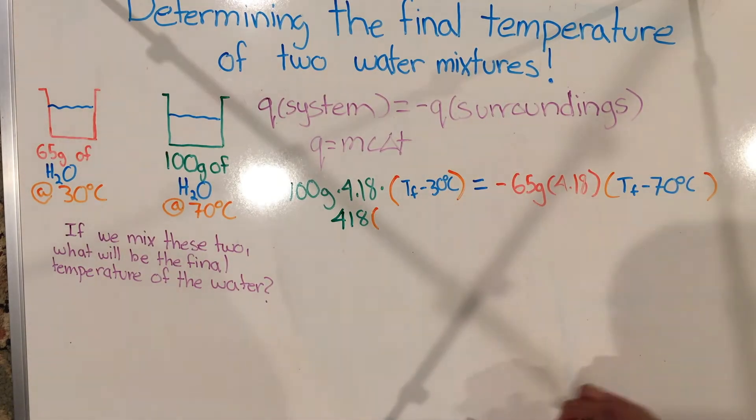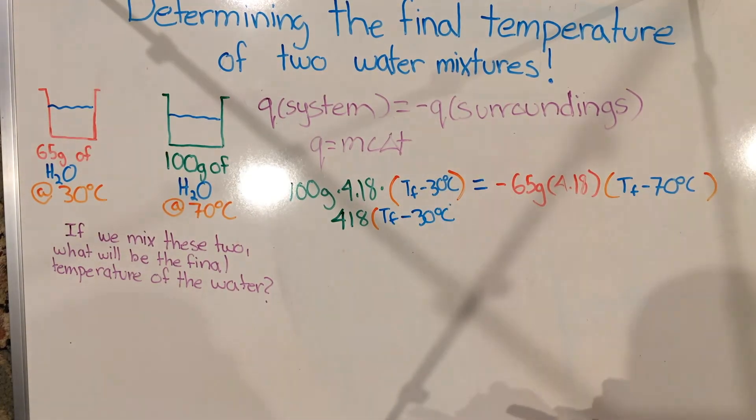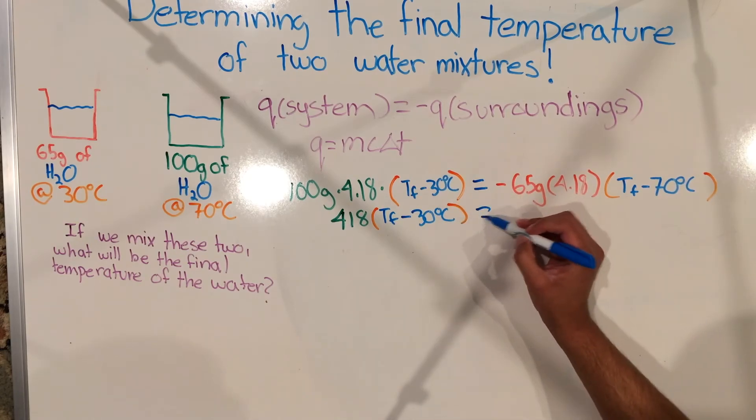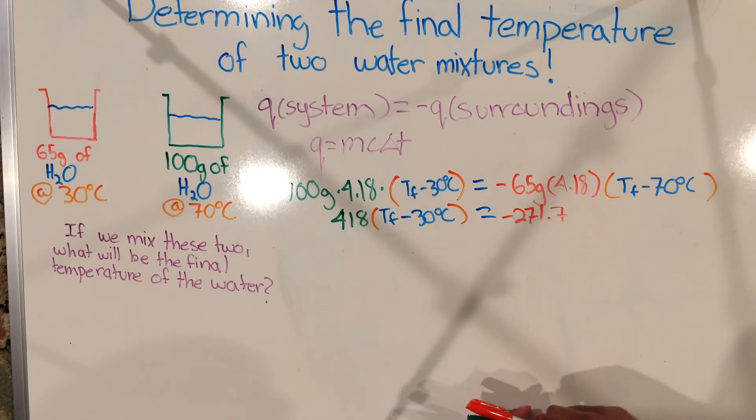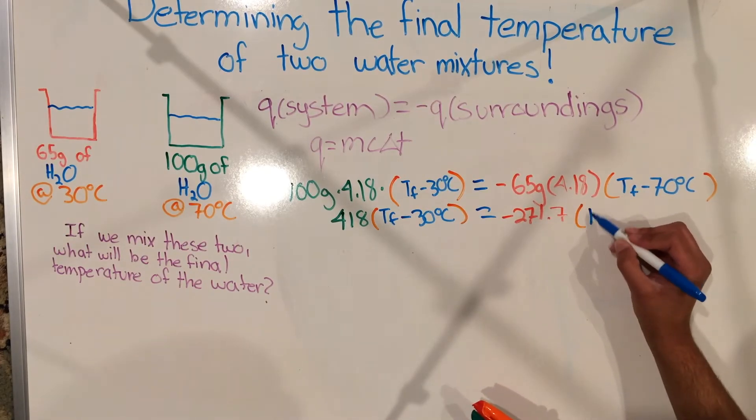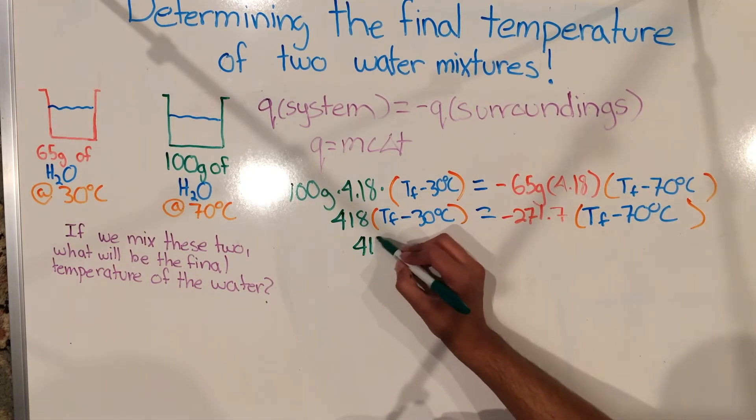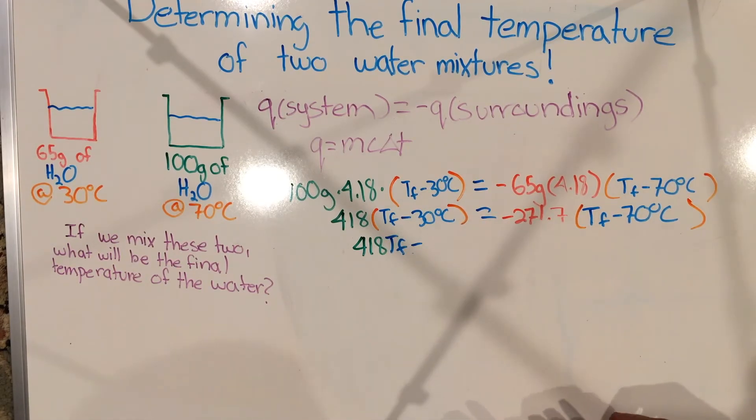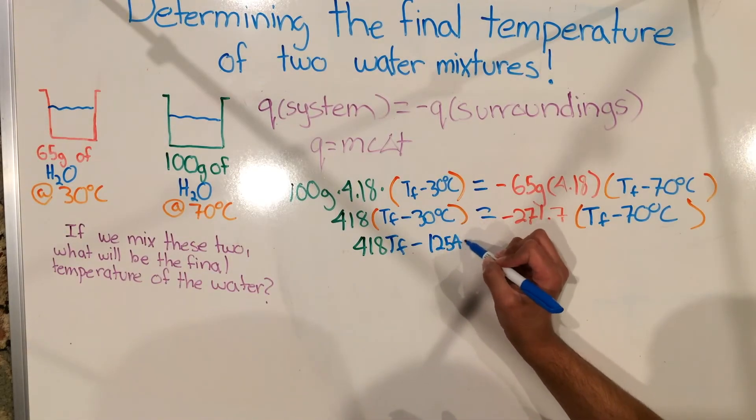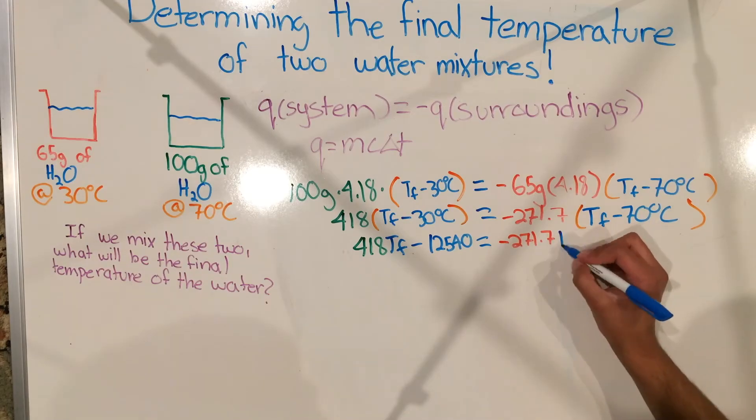First, we multiply out and distribute. We multiply 100 by 4.18 and negative 65 by 4.18 and we get 418 times the final temperature minus 30 and negative 271.7 times the final temperature minus 70. And then we distribute those to each of the individual constants and variables and we get 418 times the final temperature minus 12,540 is equal to negative 271.7 times the final temperature plus 19,019.